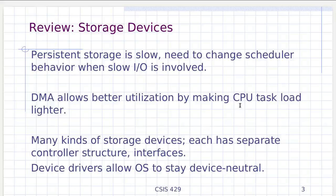Persistent storage can be slow — though newer developments are making storage faster. For hard drives, we need to consider this in operating system design and change scheduler behavior when slow IO to storage devices is involved. We can use direct memory access (DMA), which offloads grunt work from the CPU to a DMA controller, improving CPU utilization.